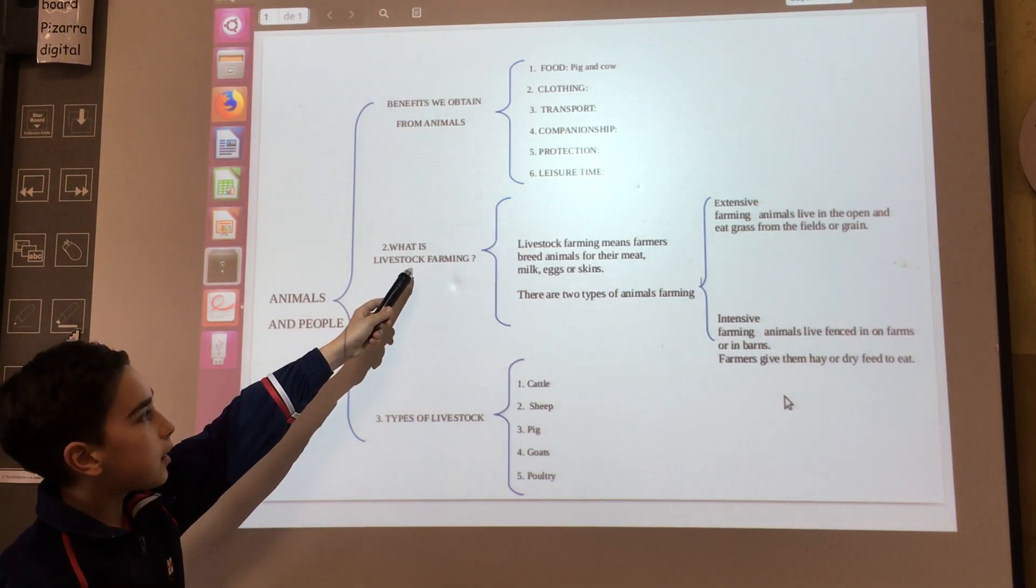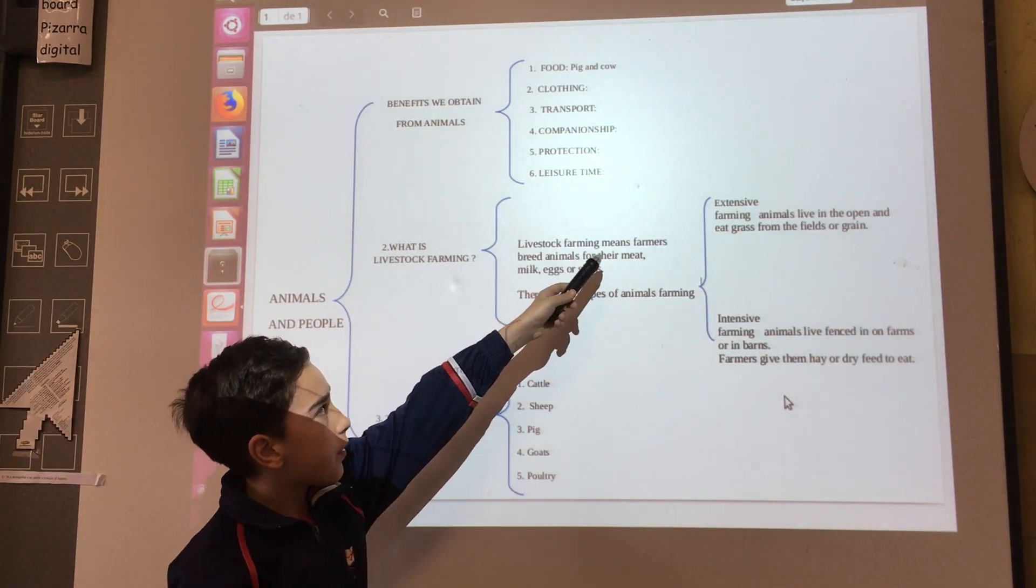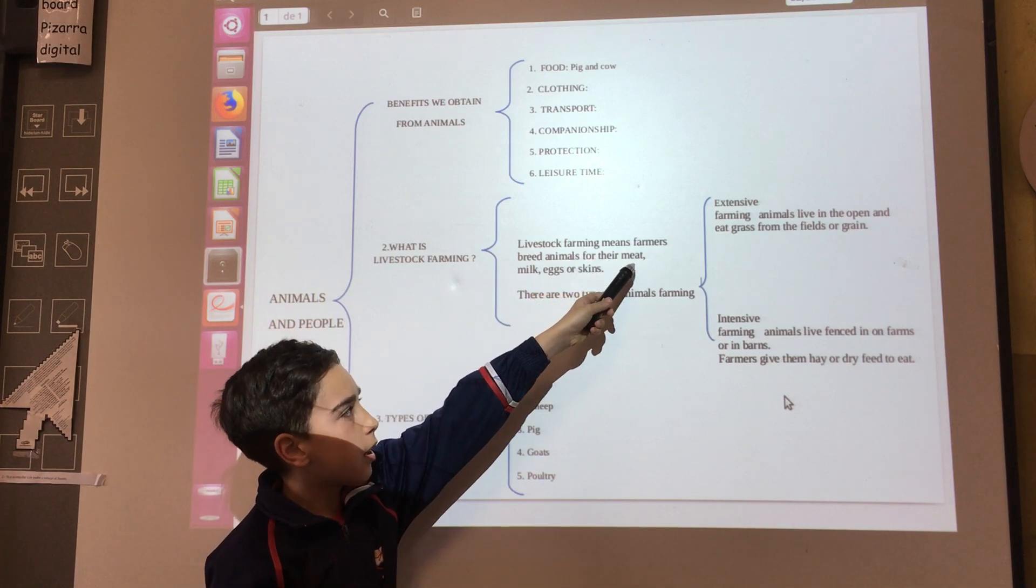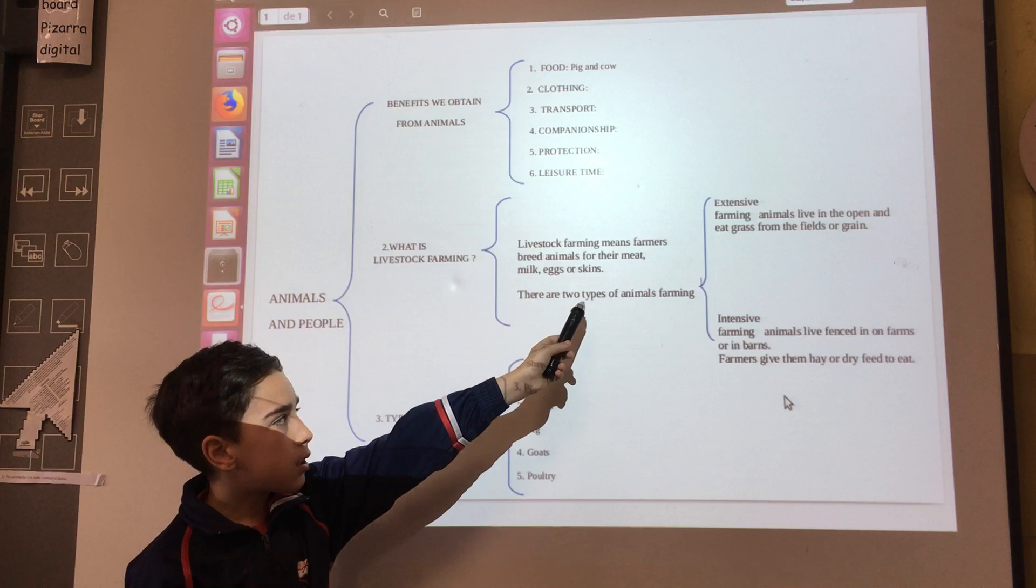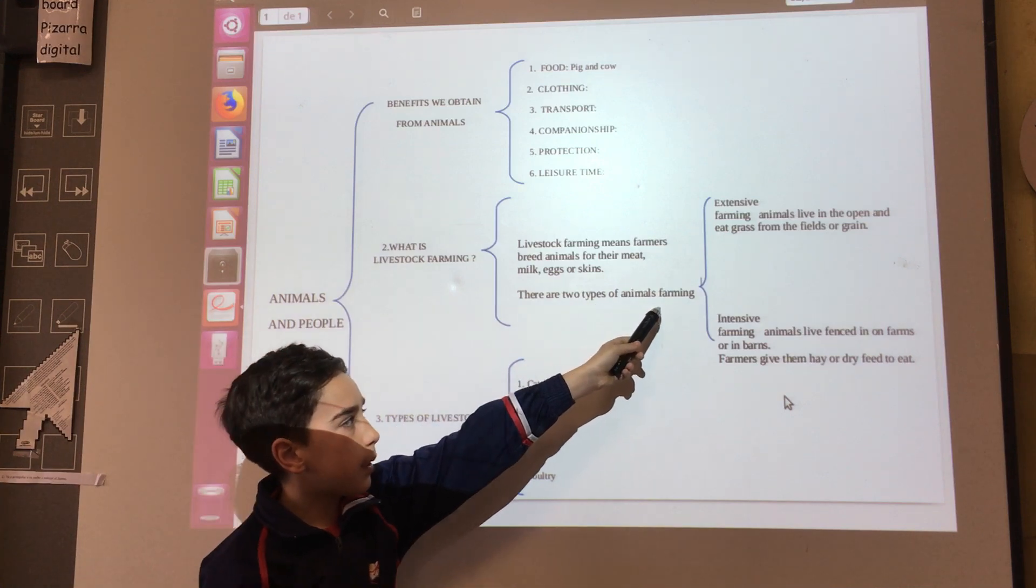What is livestock farming? Livestock farming is farming with animals for their meat, milk, eggs, or skin. There are two types of animal farming.